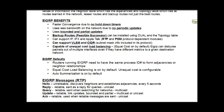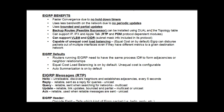EIGRP has faster convergence due to no hold-down timers, which RIP has. Convergence is when all the routers in your network know about all the routes. If a route goes down and other routers don't know about it, the network is said to not be converged. You want all routers to learn very quickly about any downed routes — that's called convergence, and it's a lot faster with EIGRP.